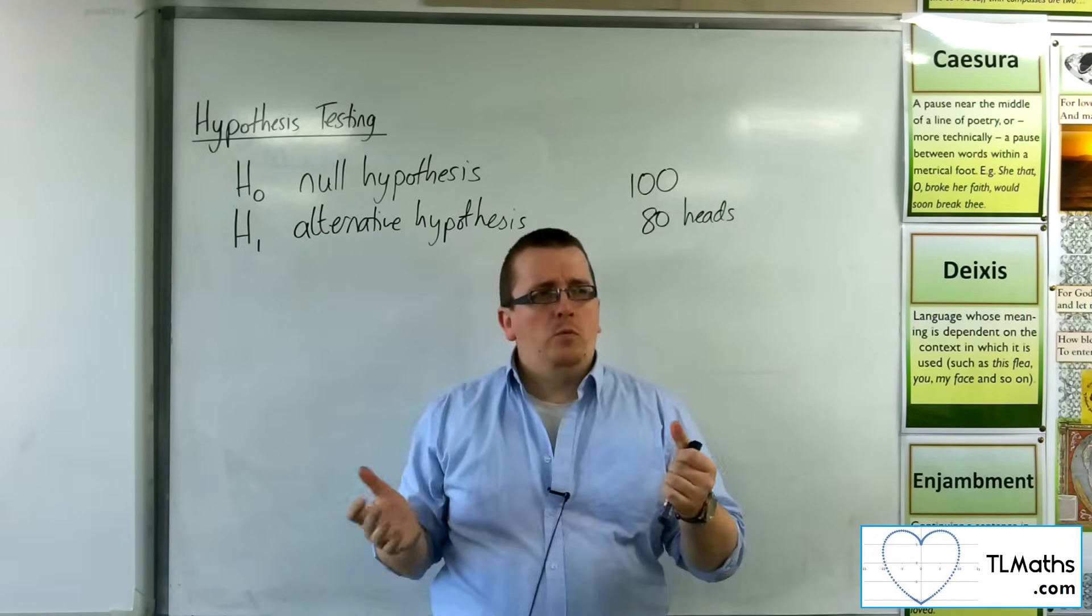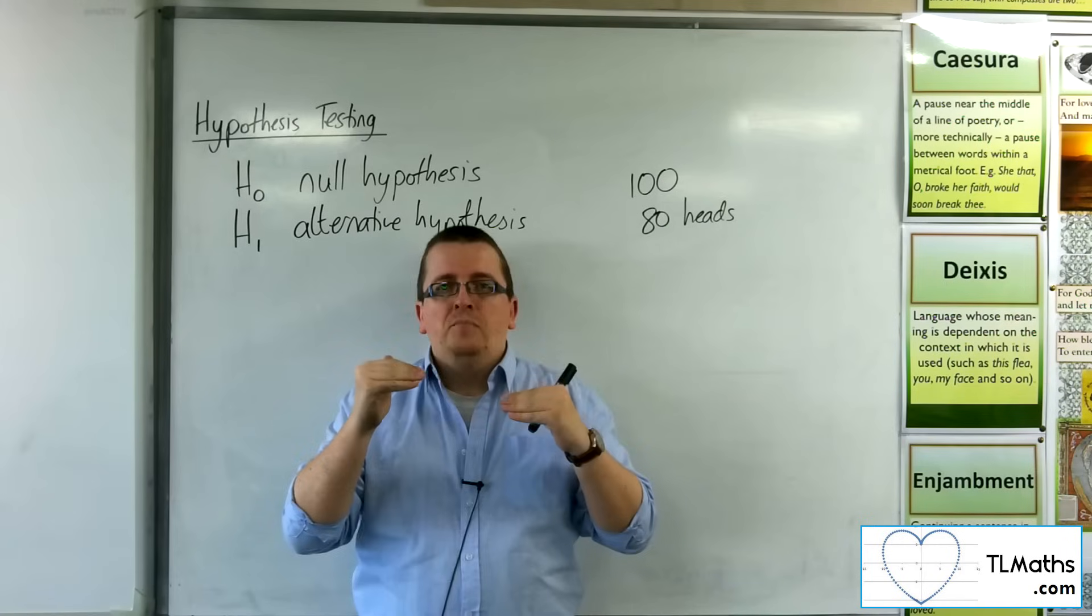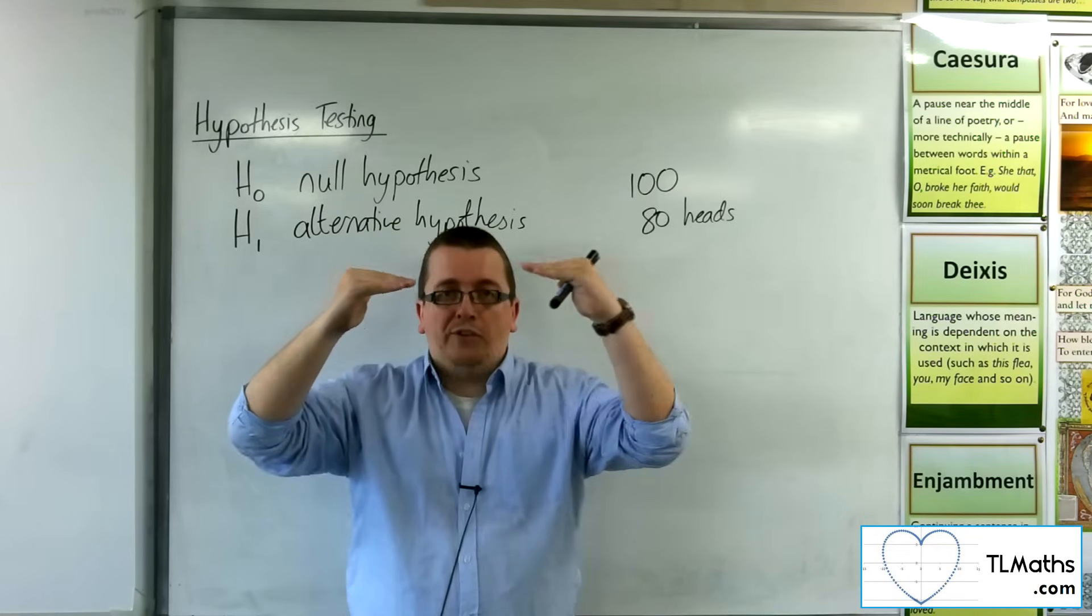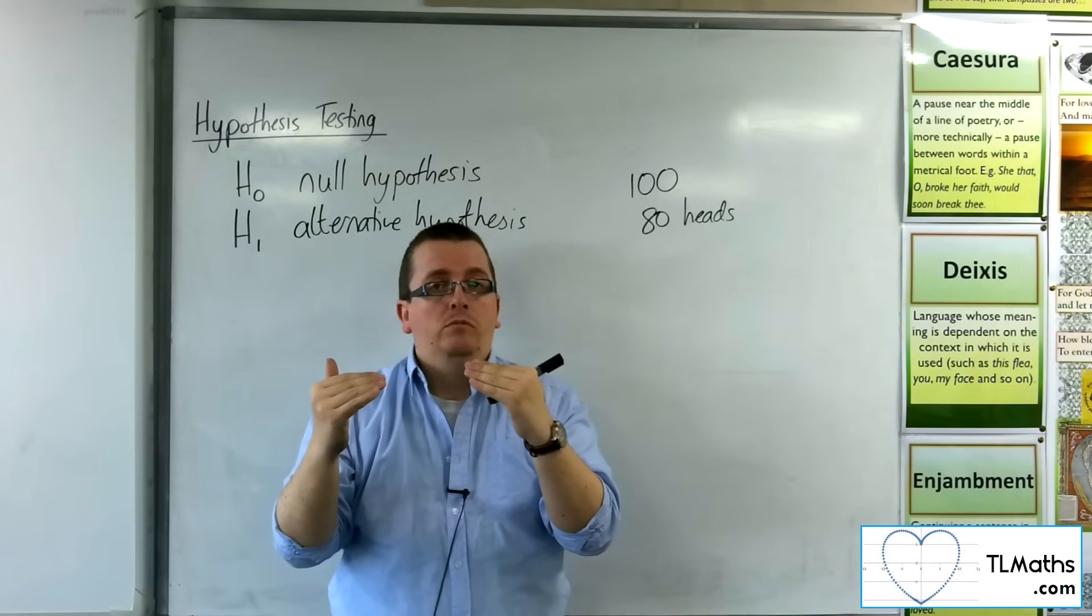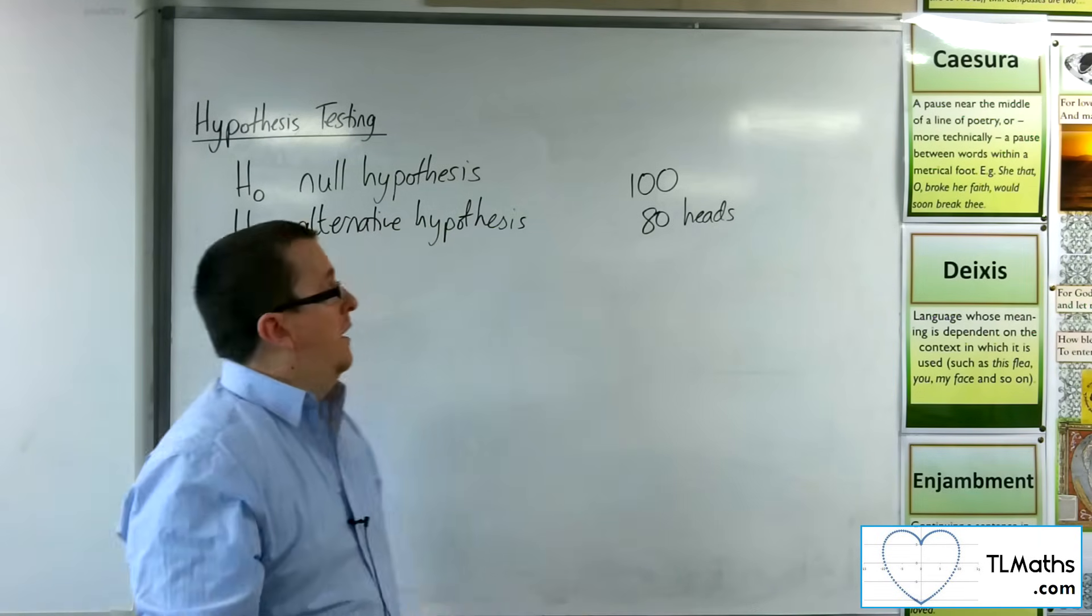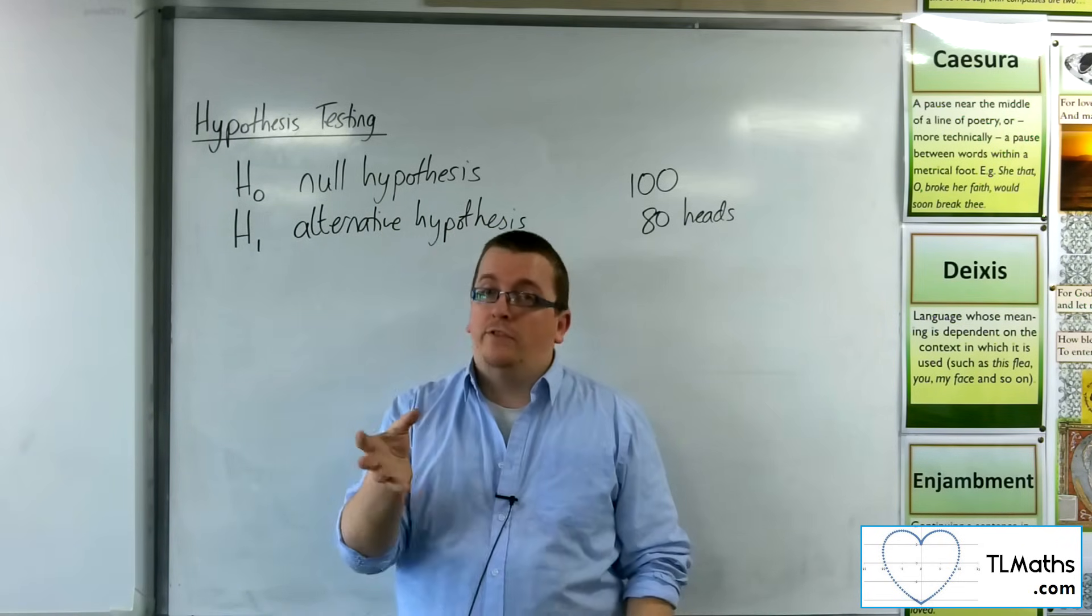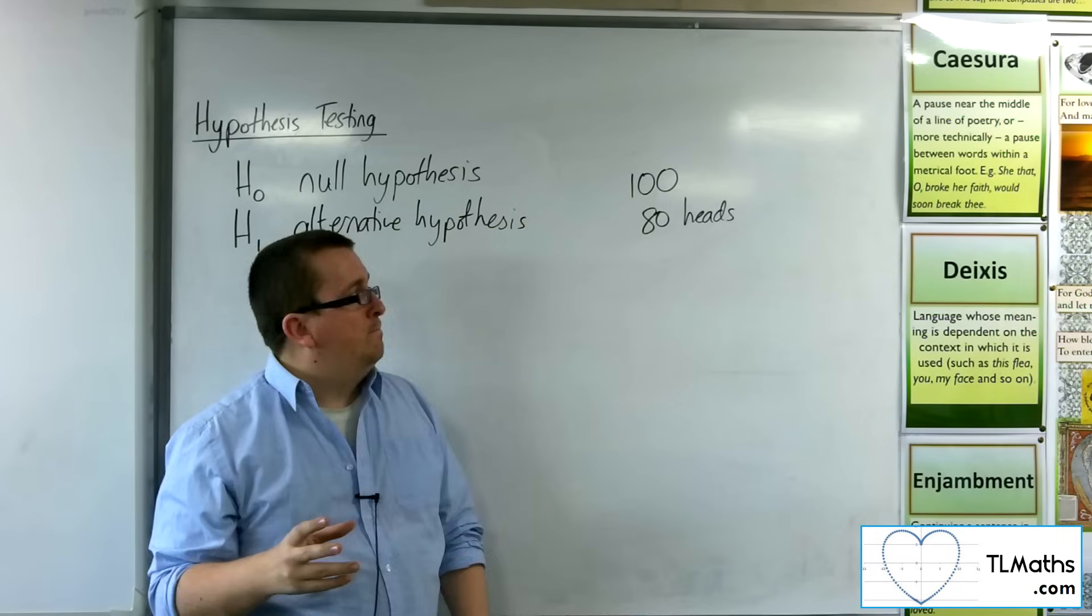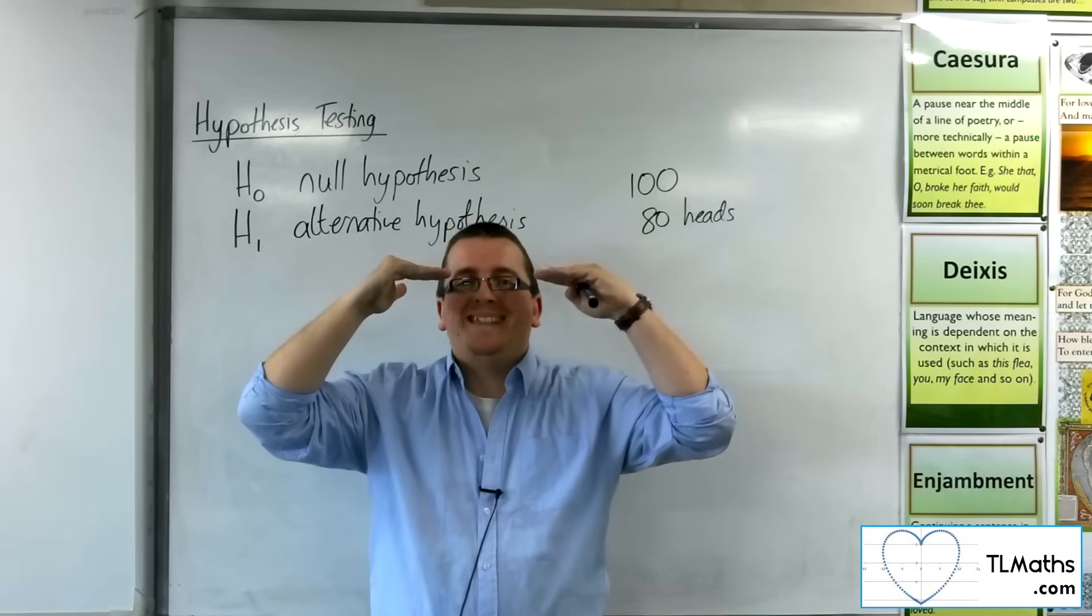So, what you'd probably want to do is you would set yourself a limit. Where you would say, right, if I get more than this number of heads, then I will call that a significant result. And so, I would have evidence to reject the null hypothesis. I'd have evidence to reject the null hypothesis to say that actually I've got evidence to say that that coin is biased. That's the idea. So, this level at which we are setting this boundary, we refer to as the significance level.